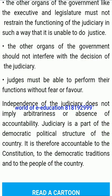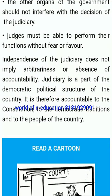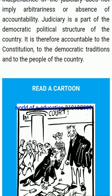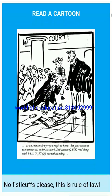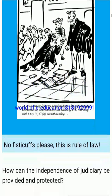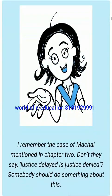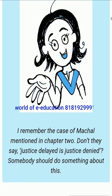Independence of judiciary means that the other organs of the government — like the executive and legislature — must not restrain the functioning of the judiciary in such a way that it is unable to do justice. The other organs of the government should not interfere with the decisions of the judiciary. Judges must be able to perform their functions without fear or favor. Independence of the judiciary does not imply arbitrariness or absence of accountability. Judiciary is accountable to the constitution, to democratic traditions, and to the people of the country.